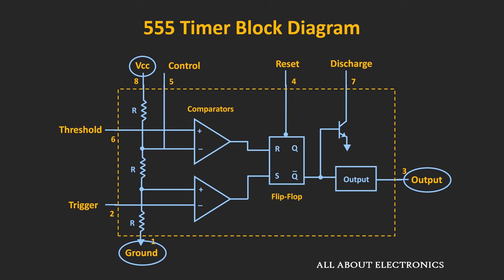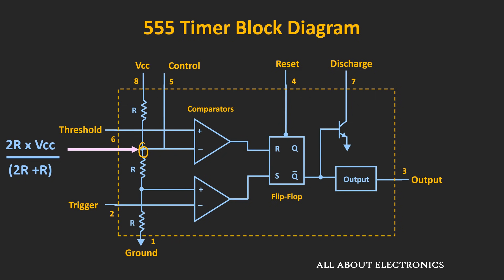To understand the purpose of the rest of the pins, let's first understand the working of each block. The first block of this 555 timer IC is the voltage divider circuit. The voltages at two nodes go to the comparator, and here we are assuming the op-amp used as a comparator is an ideal op-amp, so no current is flowing into its terminals. Applying the voltage divider rule, the voltage at the first node equals 2R divided by (2R + R) times the supply voltage, which is 2/3 Vcc. This voltage is given as a reference to the first comparator.